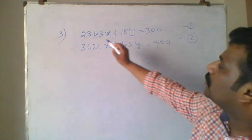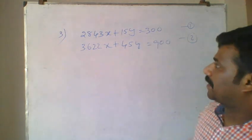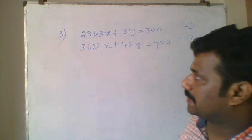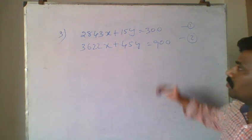Then we can see the next question. 2843x plus 15y equals 300, and 3622x plus 45y equals 900. How to solve this?